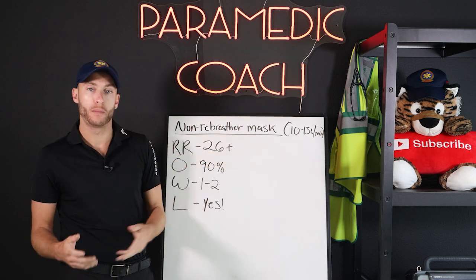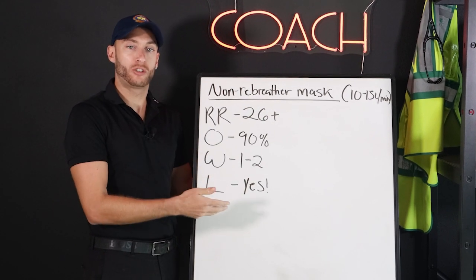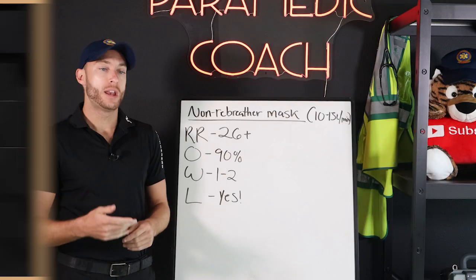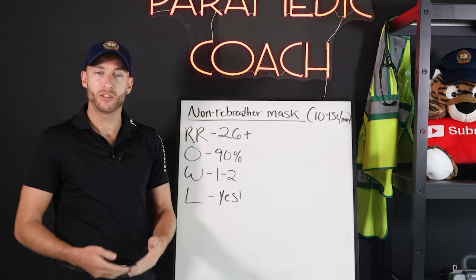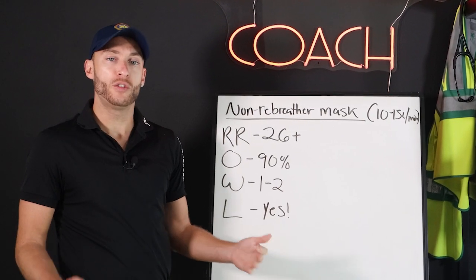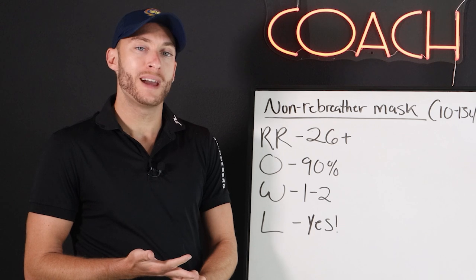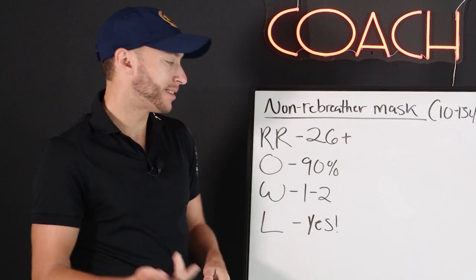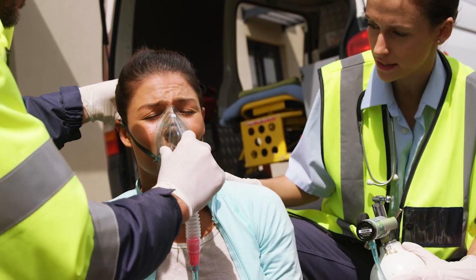Now let's look at the non-rebreather mask, which delivers about 10 to 15 liters per minute. This is for a more severe case. Respiratory rate of 26 or higher — some rapid breathing. SpO2 around 90% or lower, possibly into the 80s. The patient is showing signs of respiratory distress but is still able to manage their own airway, still able to speak, and still conscious. That's who needs a non-rebreather.